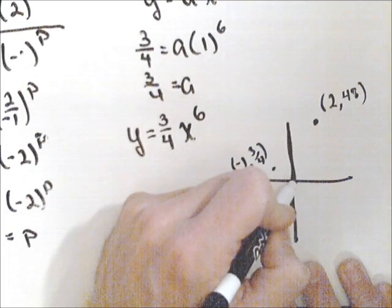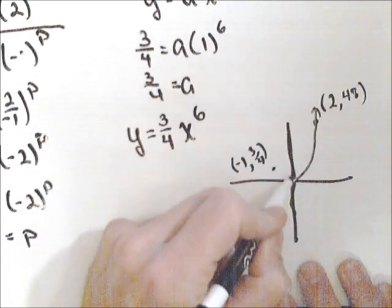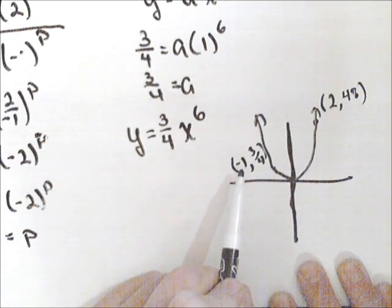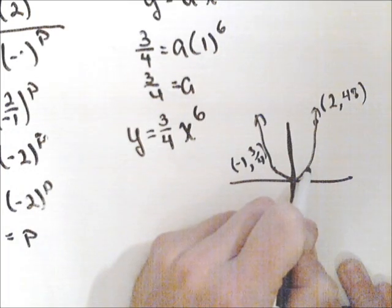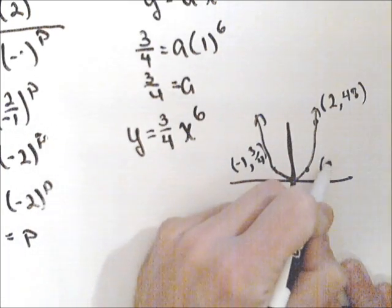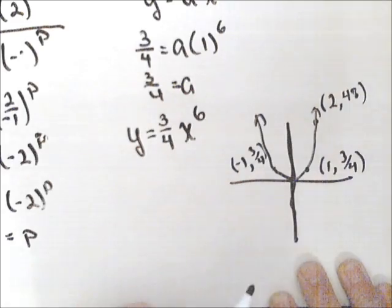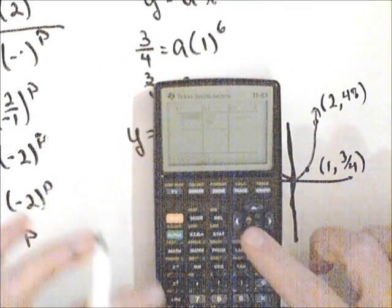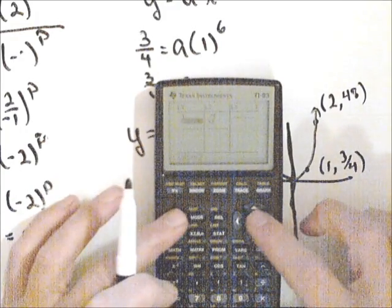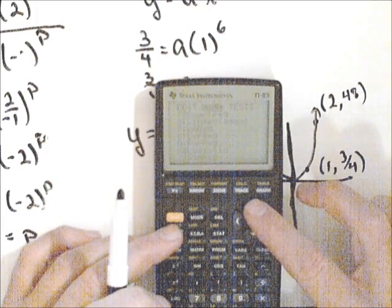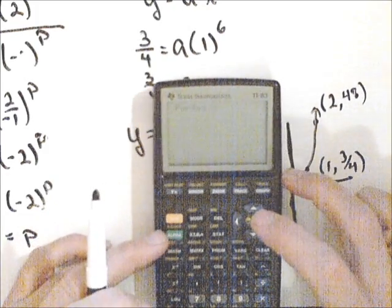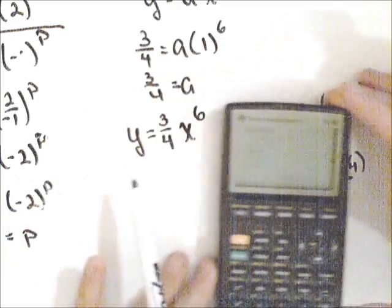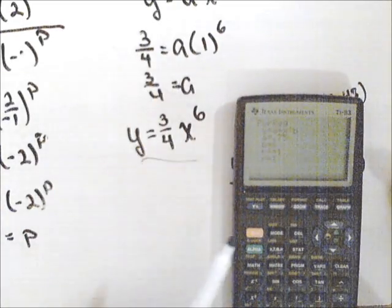We have an even power function that looks like a quadratic. This is important because if (-1, 3/4) is on the graph, then (1, 3/4) is also on the graph. So I can go back to my list and change that to positive 1. Now when I do stat calc power regression, I get y = ax^b where a = 0.75 and b = 6, the same answer we found algebraically.